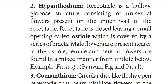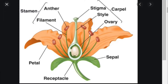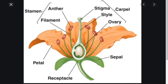The next special type is synanthium. It has a circular fleshy disc with an open receptacle, bearing pistillate flowers at the center and staminate flowers at the periphery. The pistillate flowers are female and the staminate flowers are male. Example: Dorstenia.